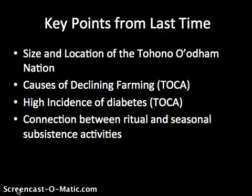Last time we discussed Tohono O'odham traditional food systems, and I just wanted to reinforce some key points. The Tohono O'odham Nation is located on the U.S.-Mexico border. It's about the size of Connecticut. It is comprised of 9 contiguous districts and 11 total districts.